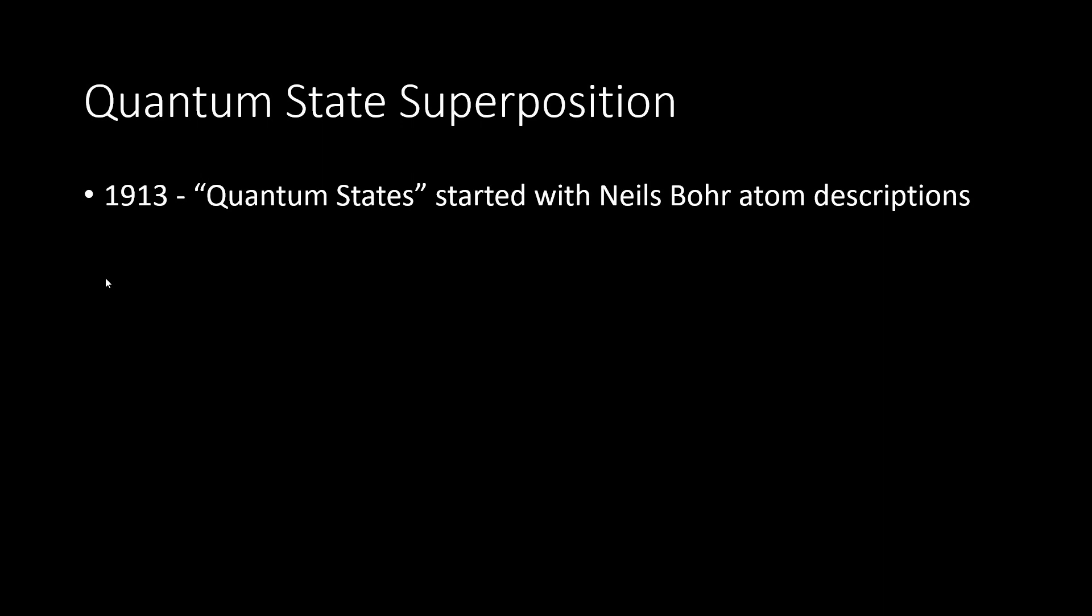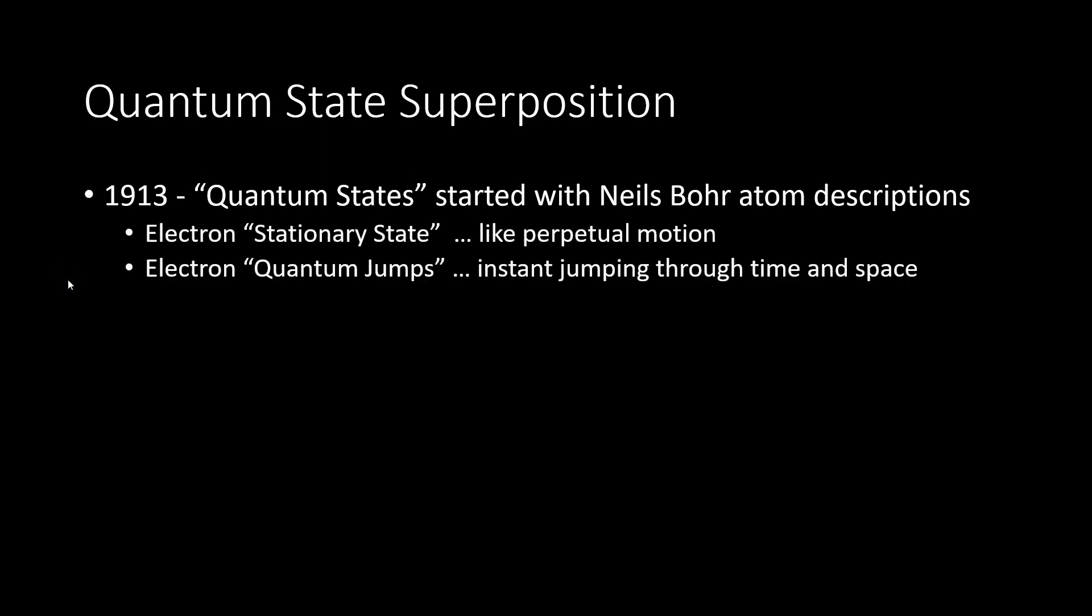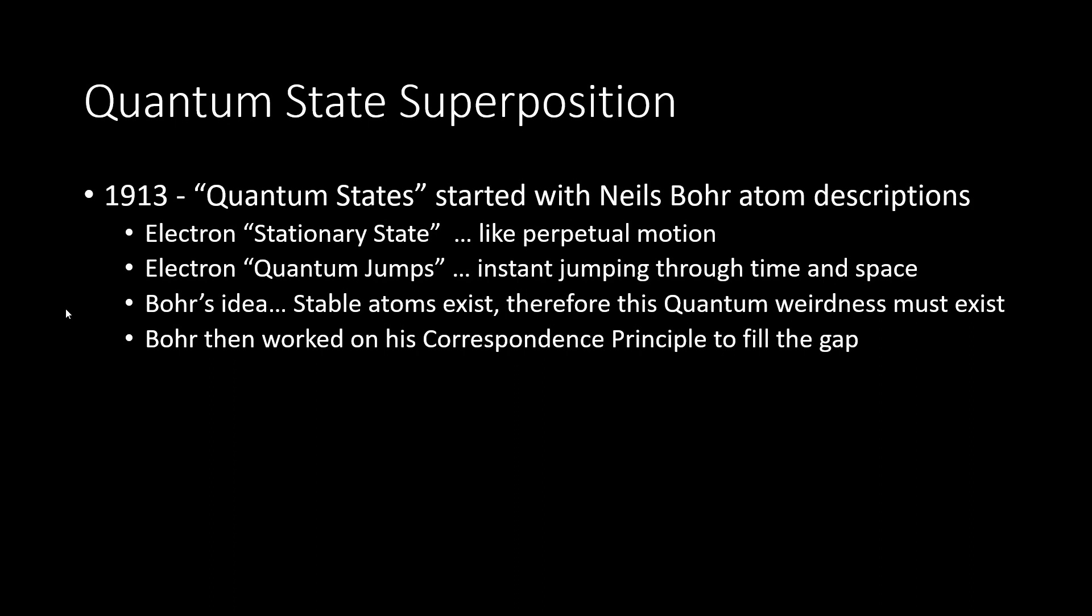Where did this idea of a quantum state even come from? We have to go back to old quantum theory where Niels Bohr was describing how an atom works. So this is the model of an atom that I think most people are familiar with. This refers to an electron orbiting a nucleus, but somehow not radiating light continuously and falling into the nucleus of the atom itself. This next one I think is more familiar to everyone. It's the idea that an electron makes a quantum leap, or this mysterious jump between orbits, and it jumps instantly through time and space. Niels Bohr justified these ideas basically just by saying, since stable atoms exist, and we can't explain this using classical physics, well then quantum weirdness must exist. And then he spent the next decade or so trying to figure out how to bridge that gap between the quantum weirdness and everyday life classical physics.